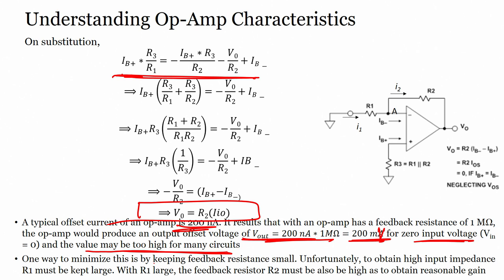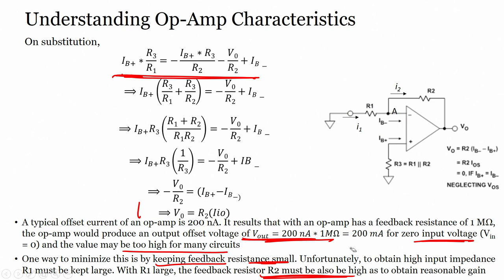One way to minimize this is by keeping the feedback resistance small. Unfortunately, to obtain high input impedance, R1 must be kept large, and the feedback resistor R2 must also be high to maintain gain. So we cannot simply reduce R2, and there is no straightforward solution at this point.